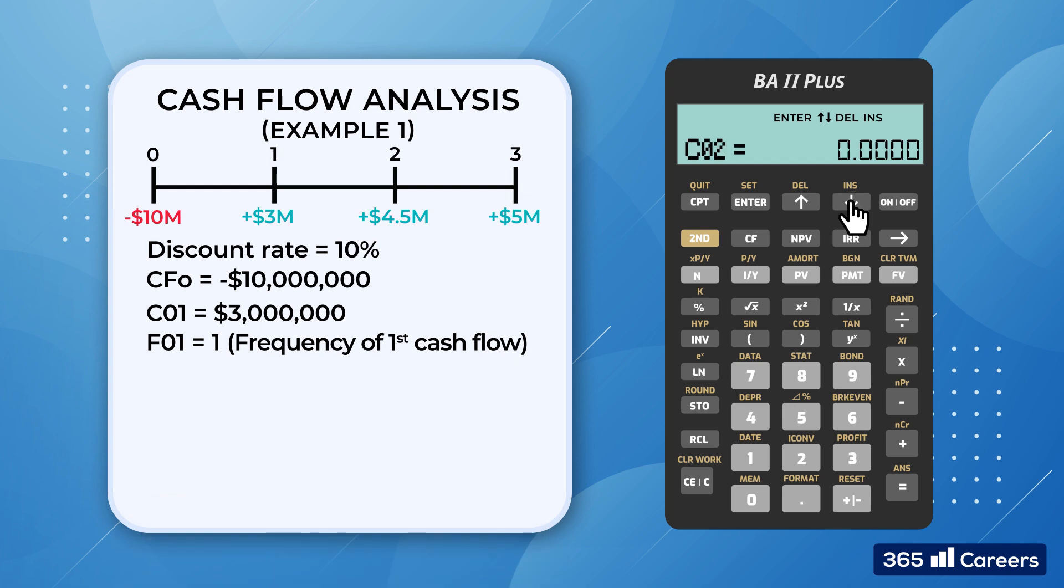The second cash flow, CO2, is equal to $4.5 million. Once again, we enter the value as a positive number, because it's a cash inflow. We scroll down past F02 to enter the third and final cash flow, CO3, which is equal to $5 million.